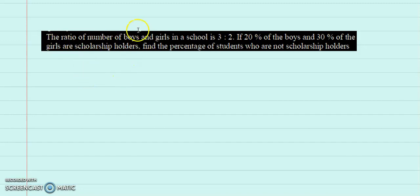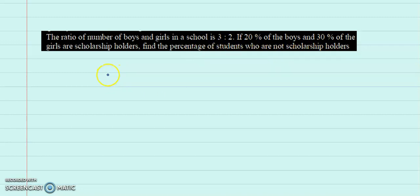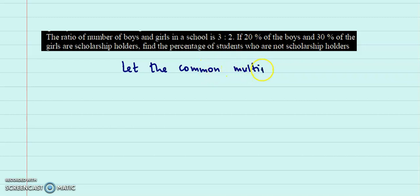The ratio of number of boys and girls in a school is 3 is to 2. If 20% of the boys and 30% of the girls are scholarship holders, find the percentage of students who are not scholarship holders. First of all, we define the common multiple as x.